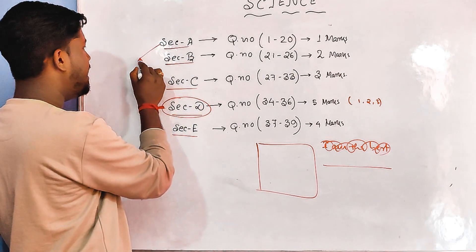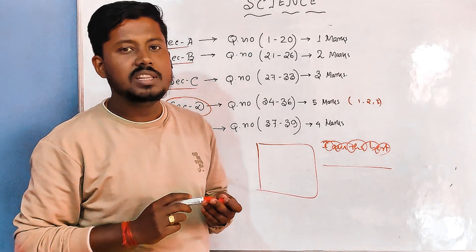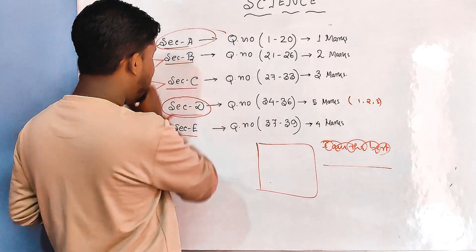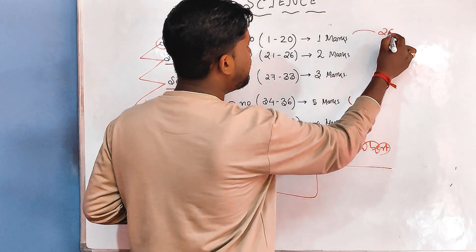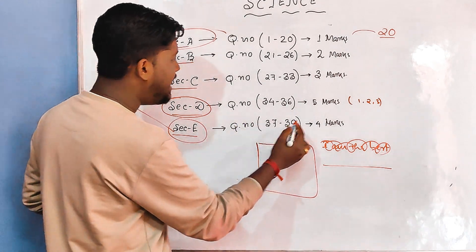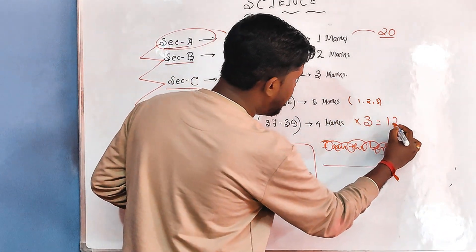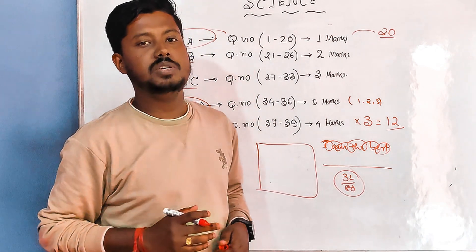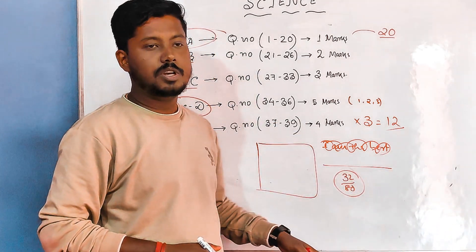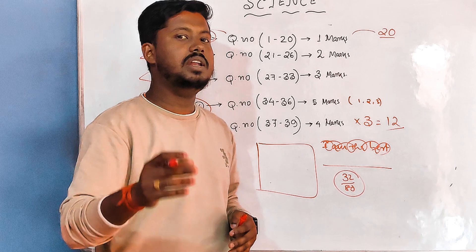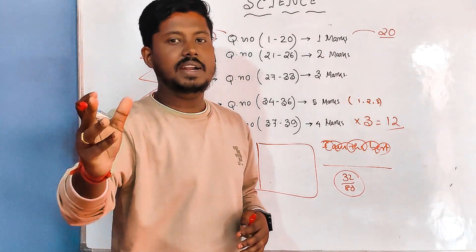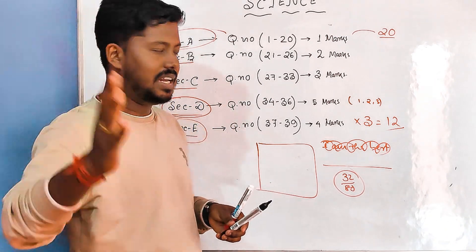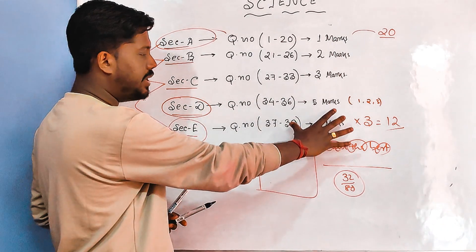Most important: you are getting 32 marks from MCQs — 20 from Section A and 12 from Section E (four marks, three questions). Focus on that 32 marks. Because from those 32, you are getting 30-plus marks, and your total will be 70 or 78-plus. Together it can be 90 or above. So first focus completely on Section D and do it properly.